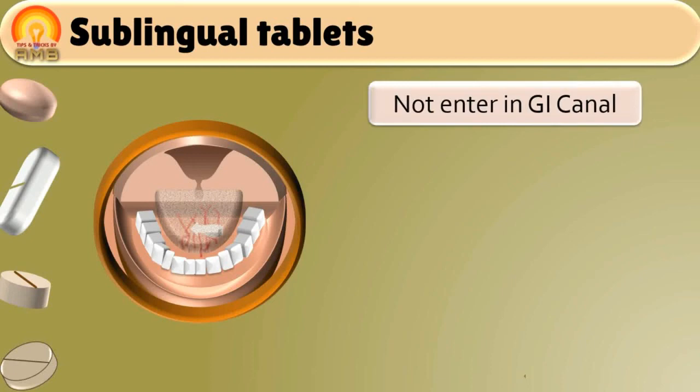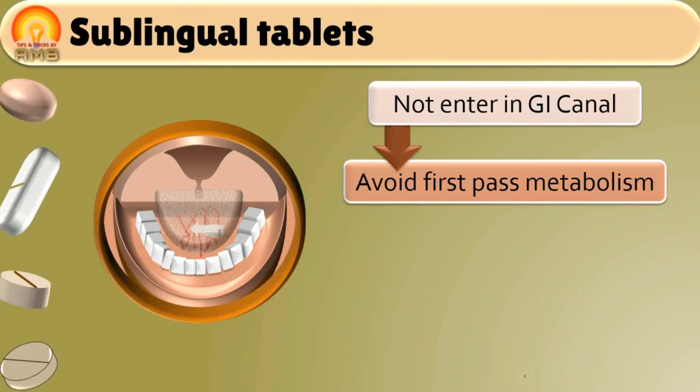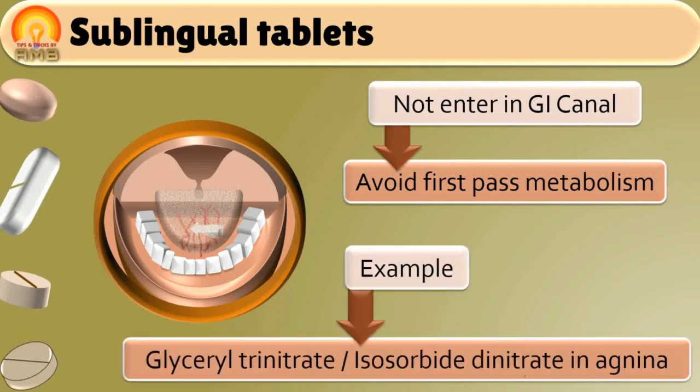Here also tablet is not intended to be swallowed into the gastrointestinal canal, thus avoiding first pass metabolism of drug. Example: glyceryl trinitrate or isosorbide dinitrate are the drugs which are manufactured as sublingual tablet dosage form for quick relief from angina pectoris.